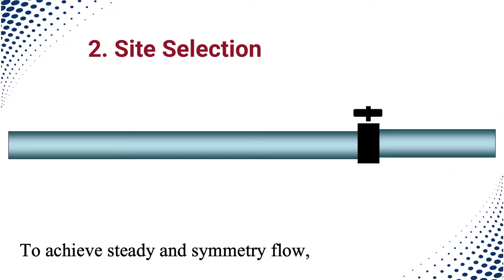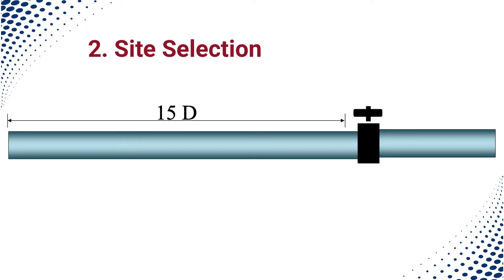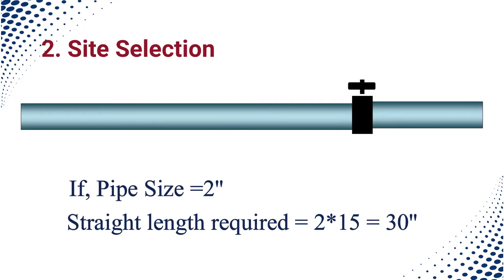To obtain a symmetrical and steady flow profile in the pipe, straight runs for both upstream and downstream are required. We recommend a total 15 diameter straight length is required for flow meter installation: 10 diameters for upstream and 5 diameters for downstream. For example, if pipe size is 2 inches, then total straight length requirement is 30 inches.